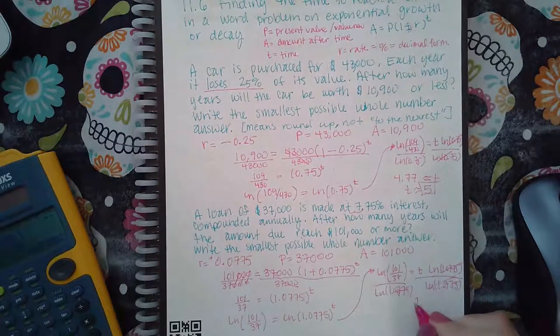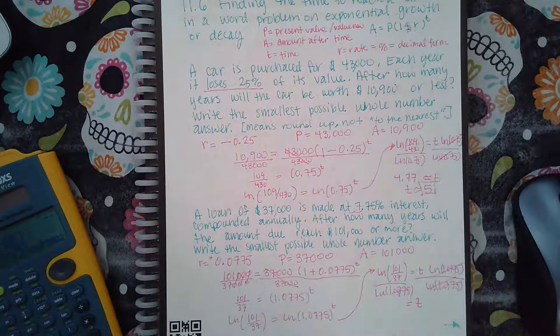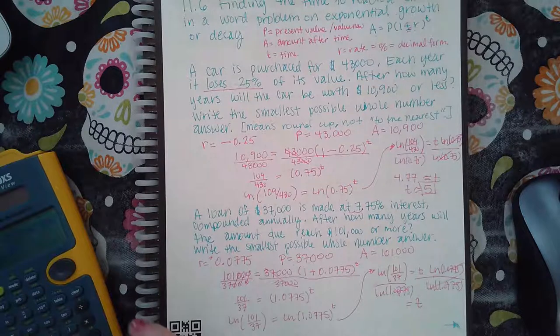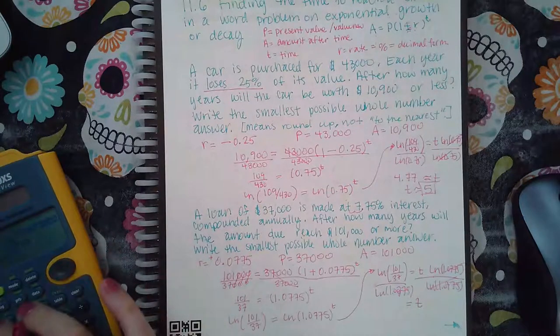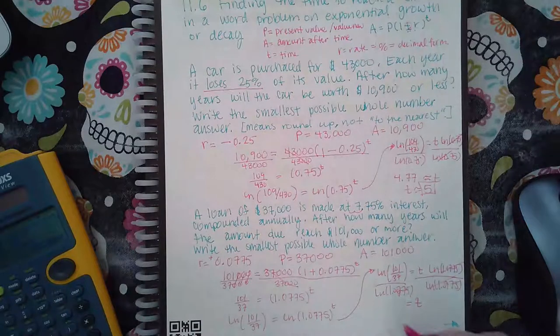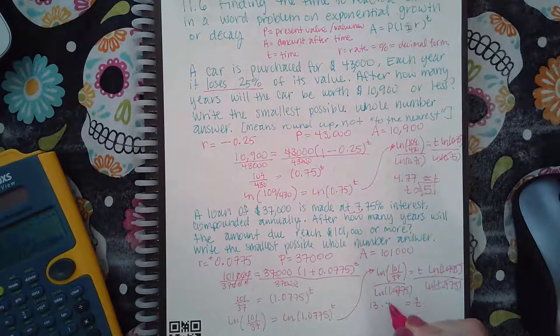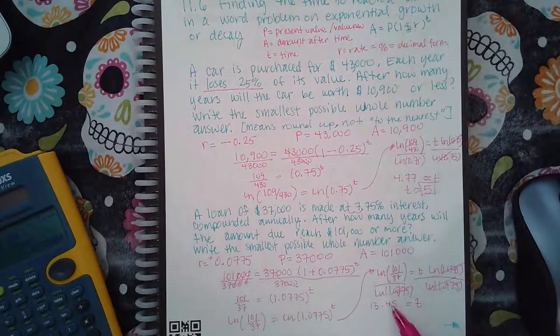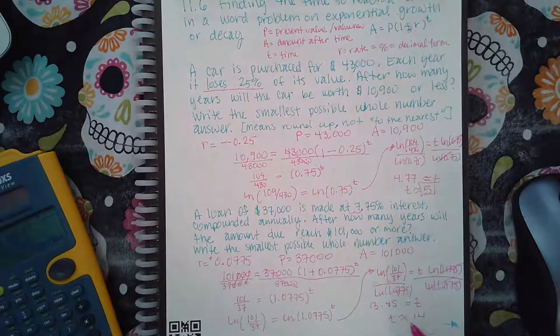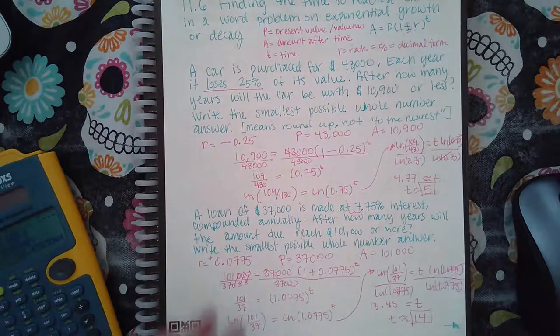So you get T equals, and then you plug all that in. So ln of 101 over 37 over ln of 1.0775. We get 13.45. This is going to go up. Even if it's 0.4, it's still going to go up. So T is approximately 14 years.